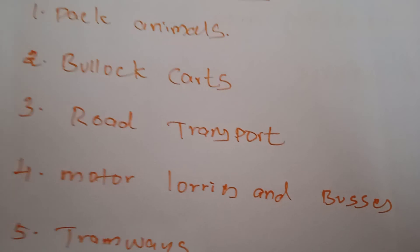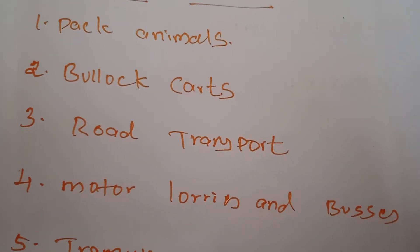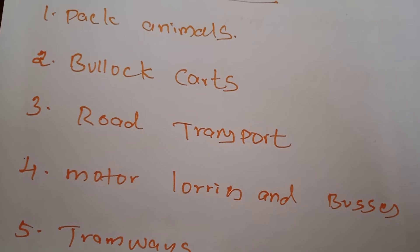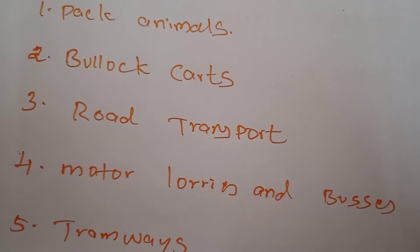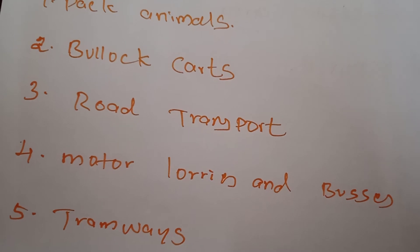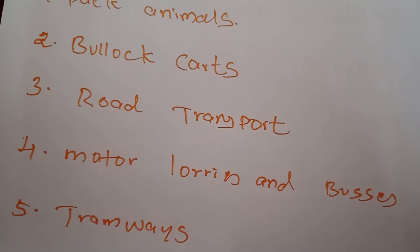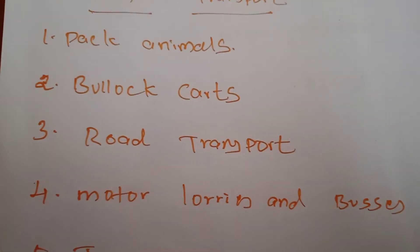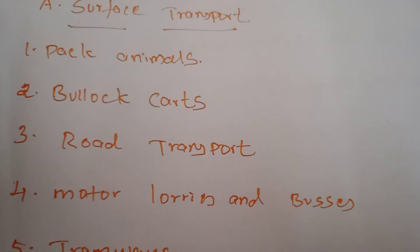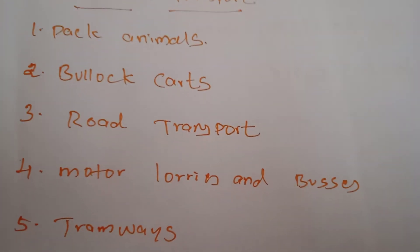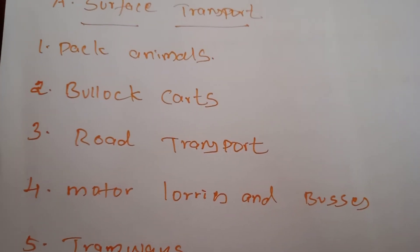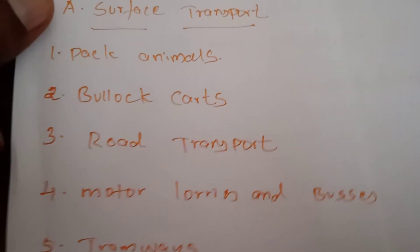Next is bullock carts. Bullock carts constitute the predominant form of rural road transport in India for goods traffic and to some extent for passenger traffic. It links villages with nearby markets and railway stations, carries produce for sale to the market, and brings consumer goods to the villages. Bullock carts are used in small rural areas, especially by agricultural producers to carry their agricultural products.